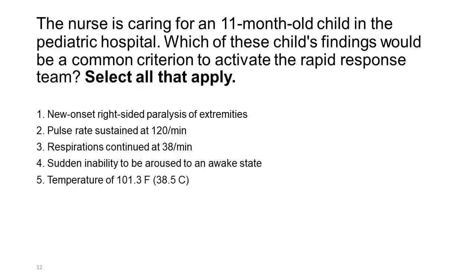The nurse is caring for an 11-month-old child in the pediatric hospital. Which of these child's findings would be a common criterion to activate the rapid response team? Select all that apply. 1. New onset right-sided paralysis of extremities. 2. Pulse rate sustained at 120 per minute. 3. Respirations continued at 38 per minute. 4. Sudden inability to be aroused to an awake state. 5. Temperature of 101.3°F (38.5°C).